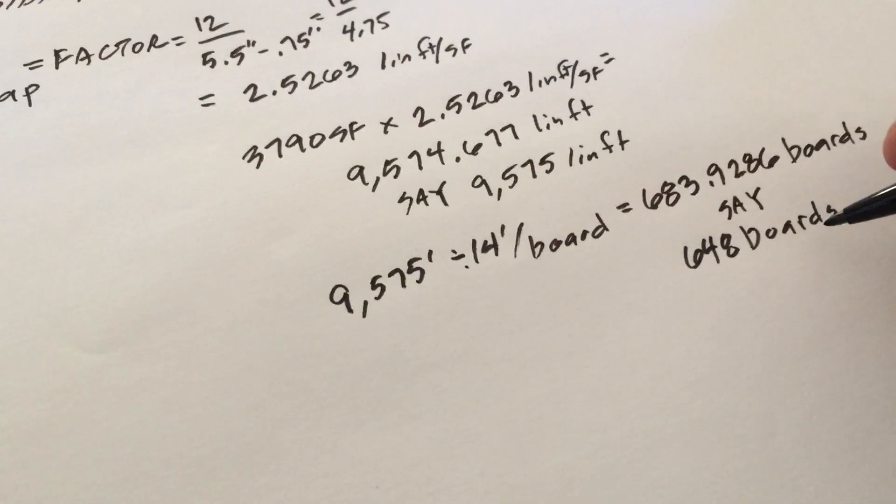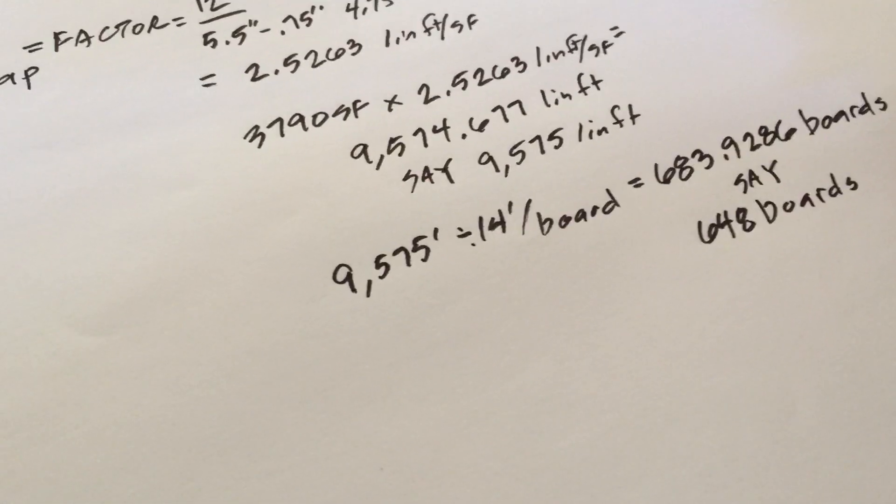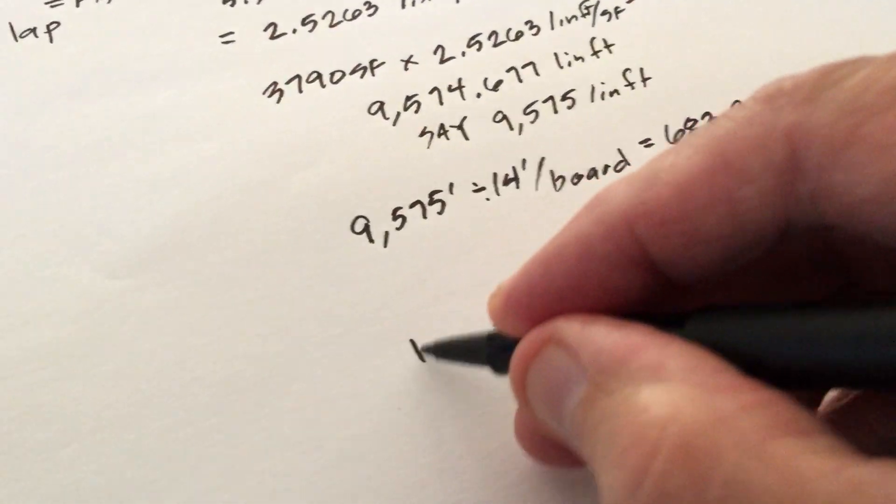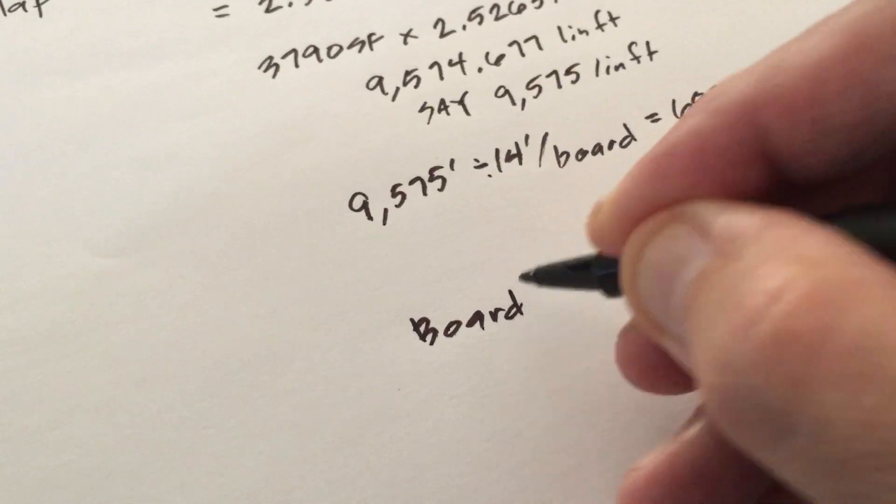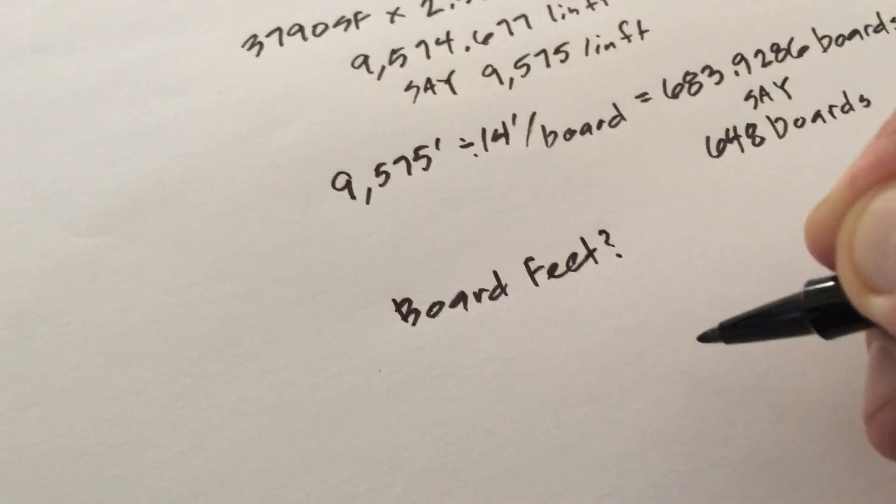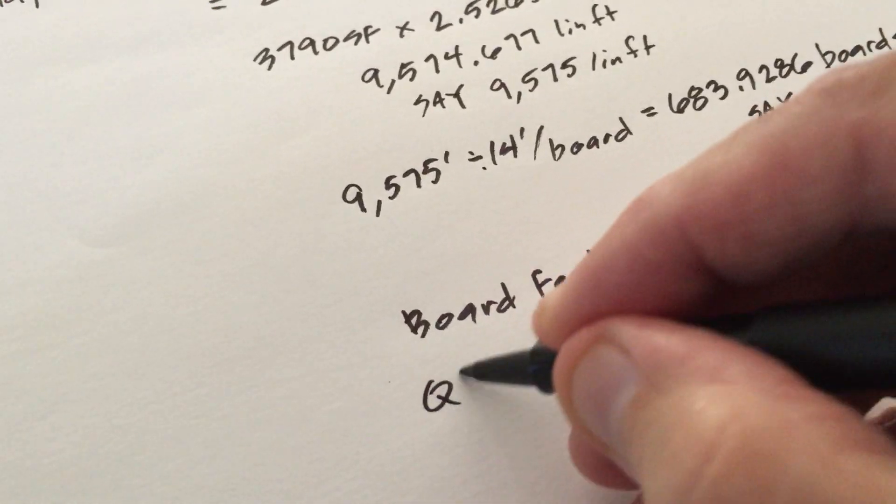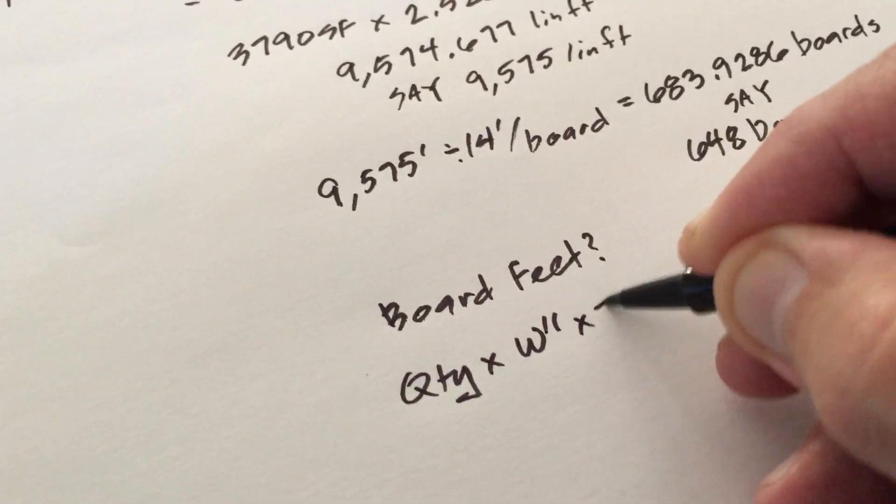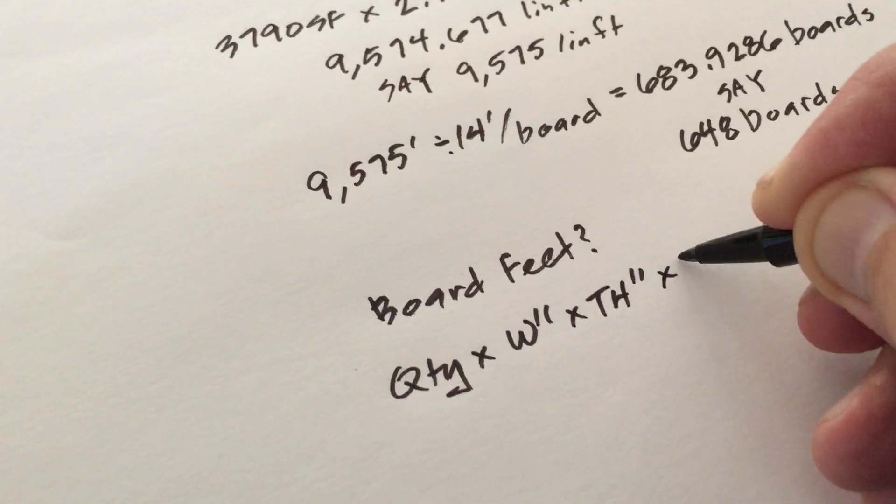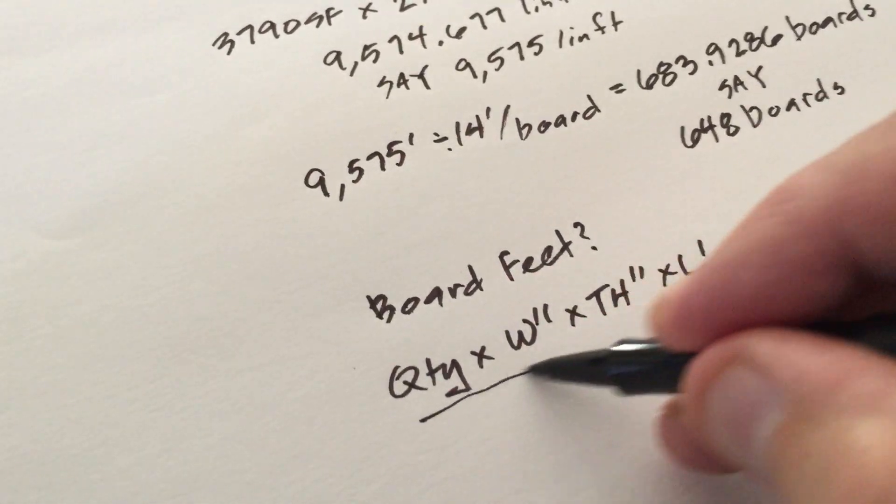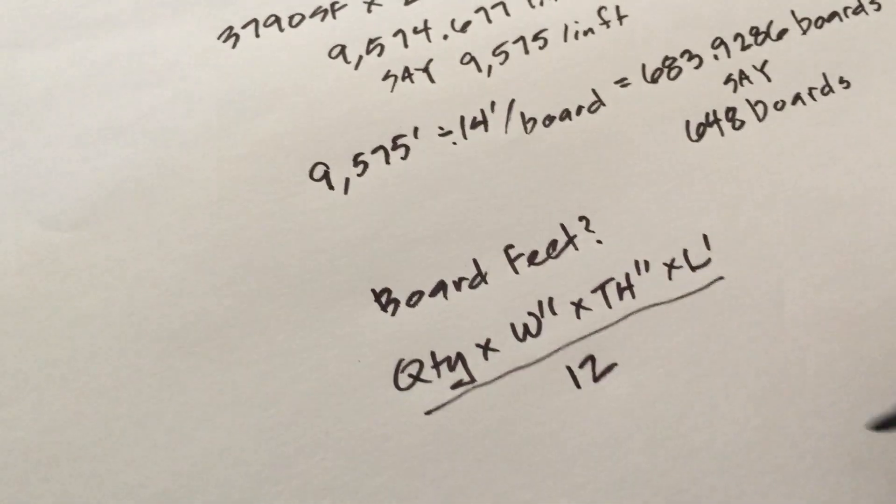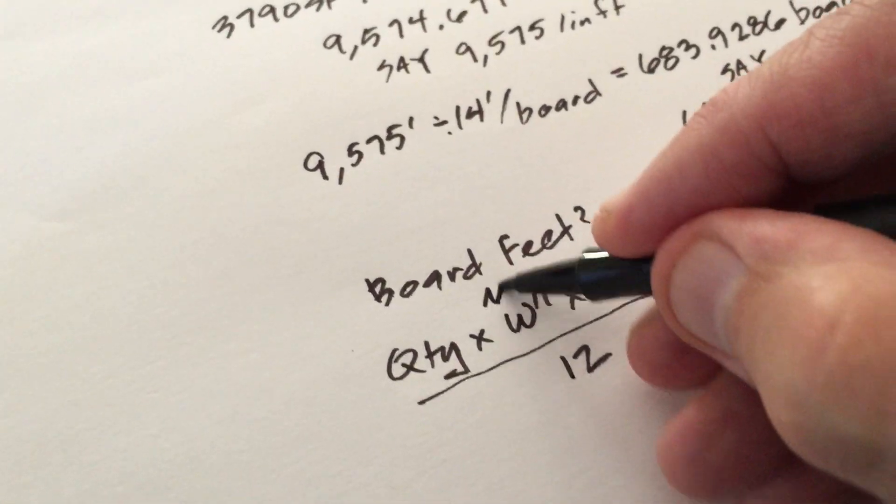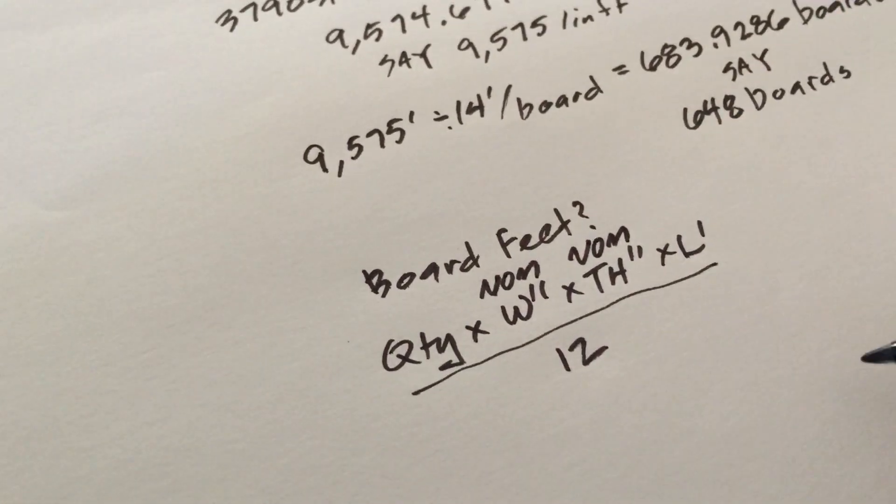And then if I did want to know how many board feet that is, I could use the board footage formula. Board feet. That's quantity times width in inches times thickness in inches times length in feet, all divided by 12. And remember these are nominal sizes.